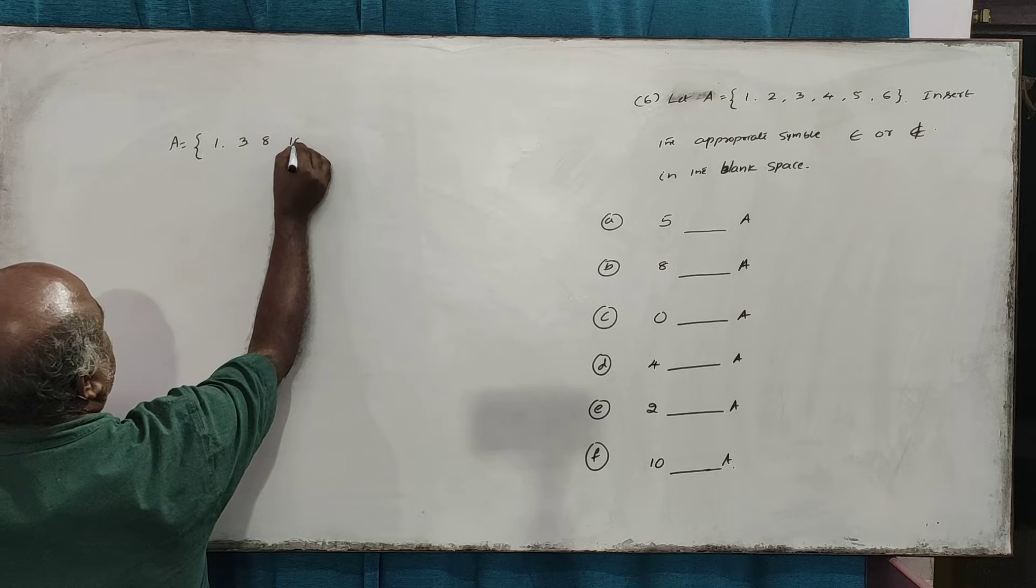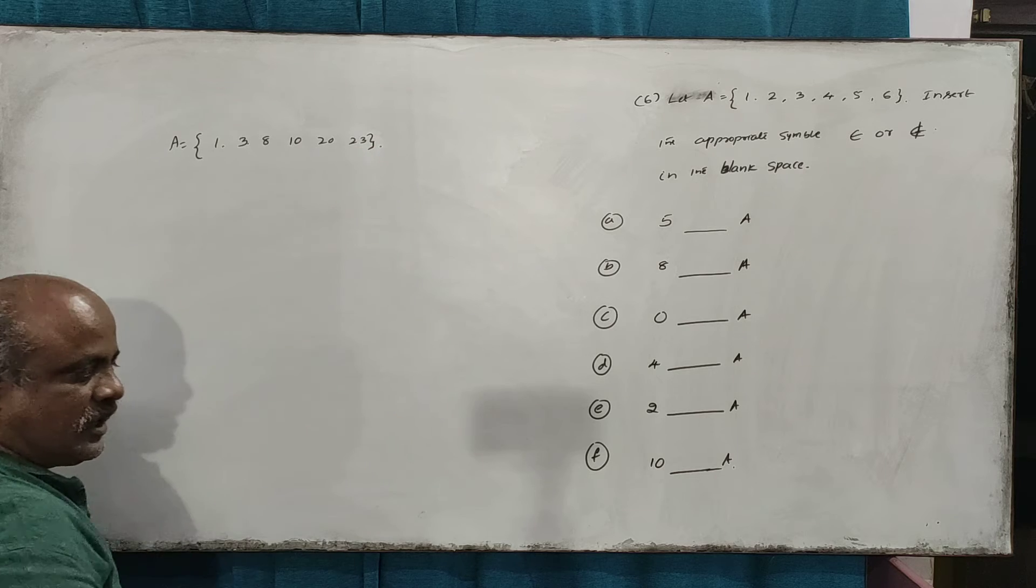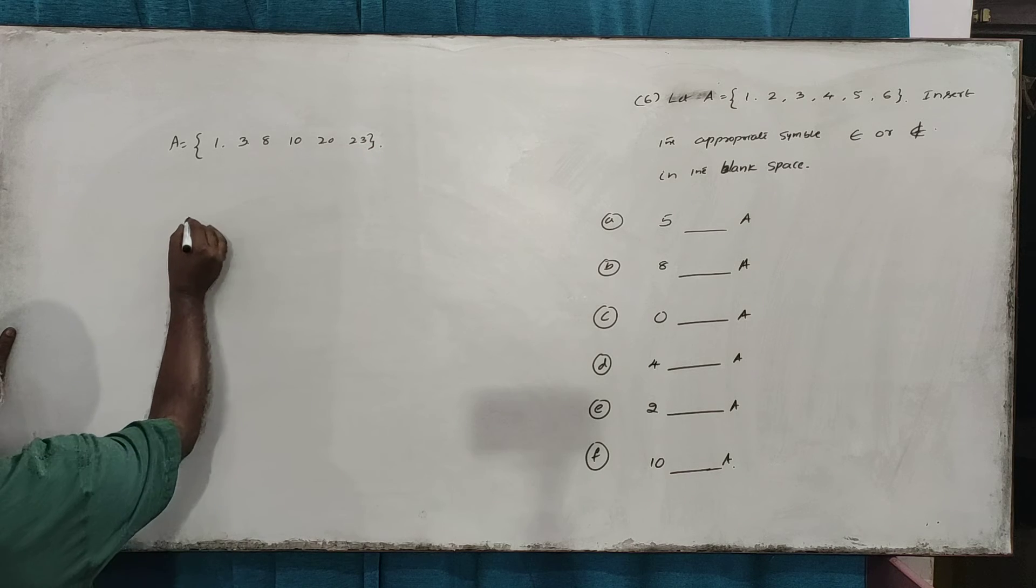three, eight, six, seven, seven, eight. That means that we have a single symbol.